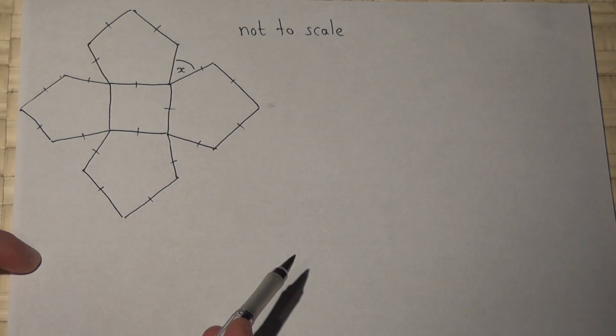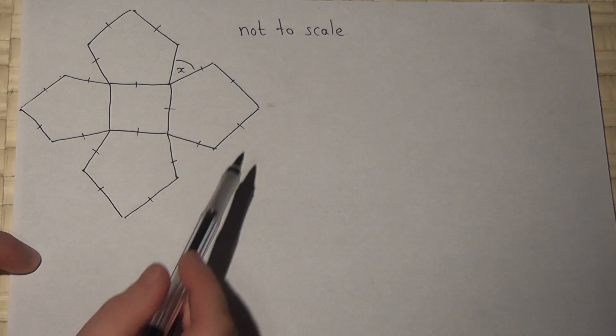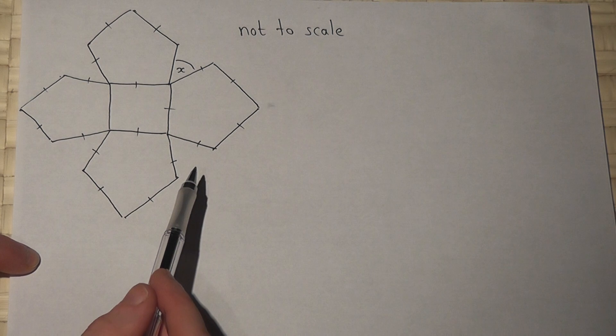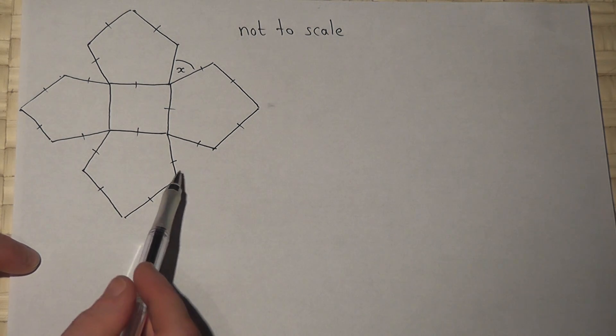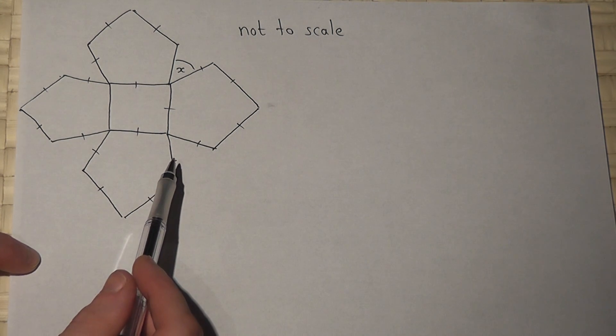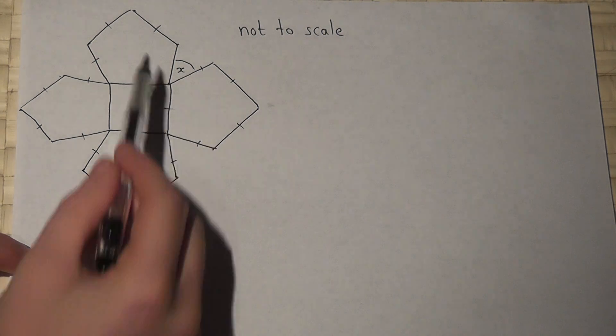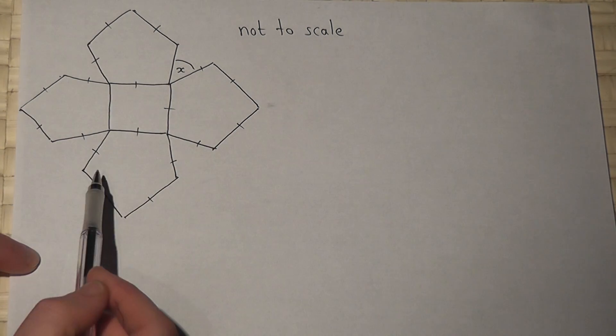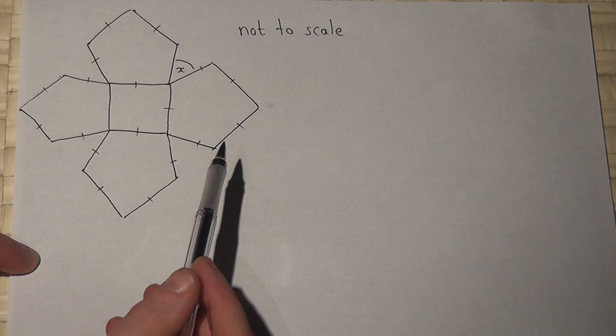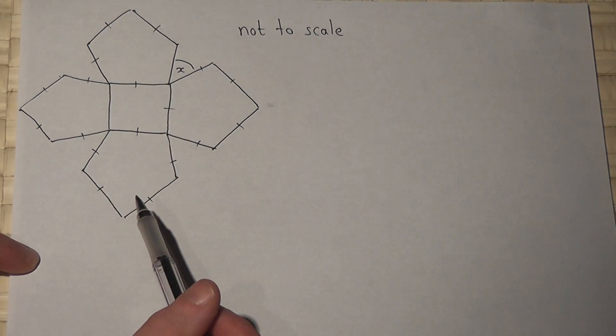In this question we're asked to find angle X. Now this is absolutely not to scale so we can't just measure to find the angle. However, we're told that these are four regular pentagons and this is a square.